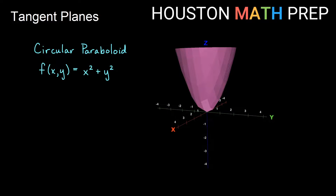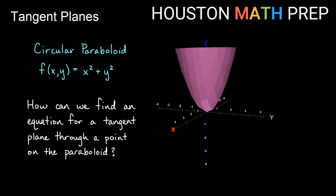Hey everyone, Houston Math Prep here to talk to you about tangent planes — planes that are tangent to our graphs in three-dimensional space. Here I have a circular paraboloid. My function of x and y is x squared plus y squared, one of our most basic equations for paraboloids. So let's say we want to find an equation for a plane that is tangent through a point on the paraboloid.